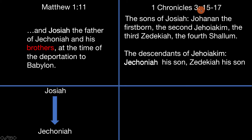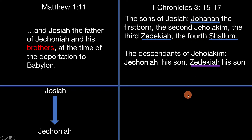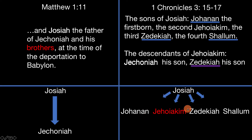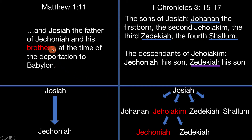However, when we go to 1 Chronicles 3, we read: 'The descendants of Jehoiakim were Jeconiah and Zedekiah.' That means Jeconiah had only one brother, Zedekiah. So the fact that Matthew says 'brothers' makes no sense for Jeconiah. However, if Jeconiah was originally Jehoiakim, this sentence does make sense, because the sons of Josiah were Jehoiakim, Zedekiah, and Shalom — so Jehoiakim had multiple brothers. It makes more sense that Jeconiah here was originally Jehoiakim, and the brothers reference makes perfect sense.